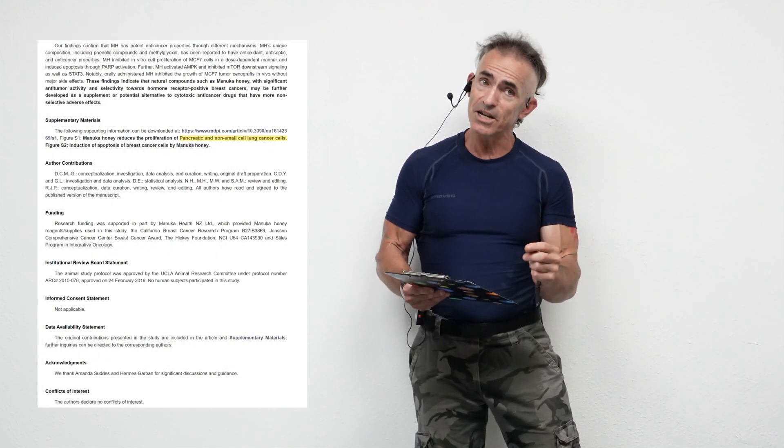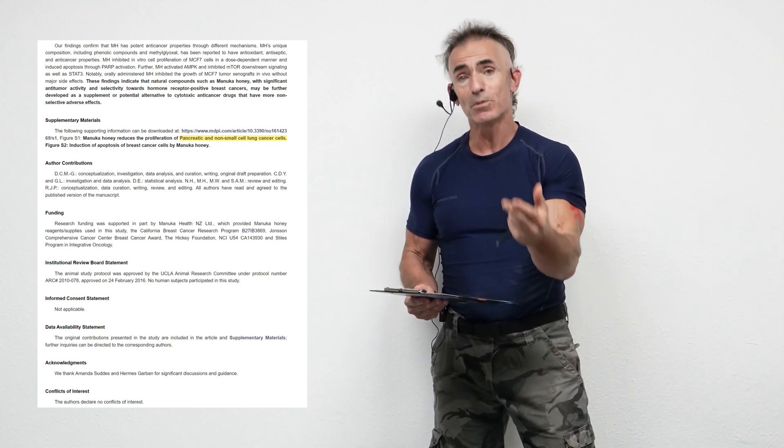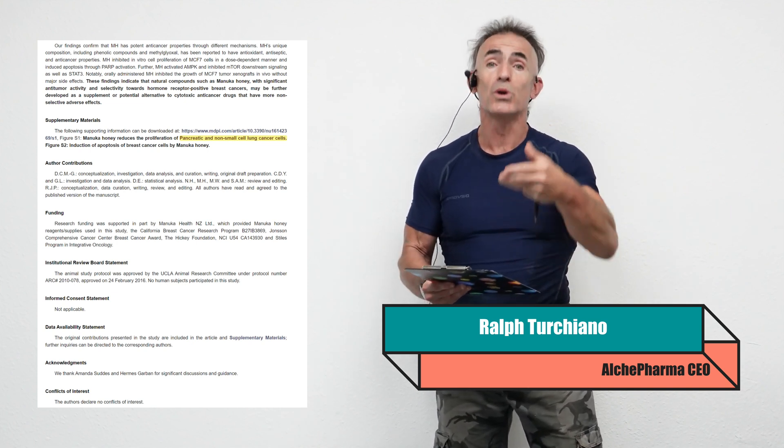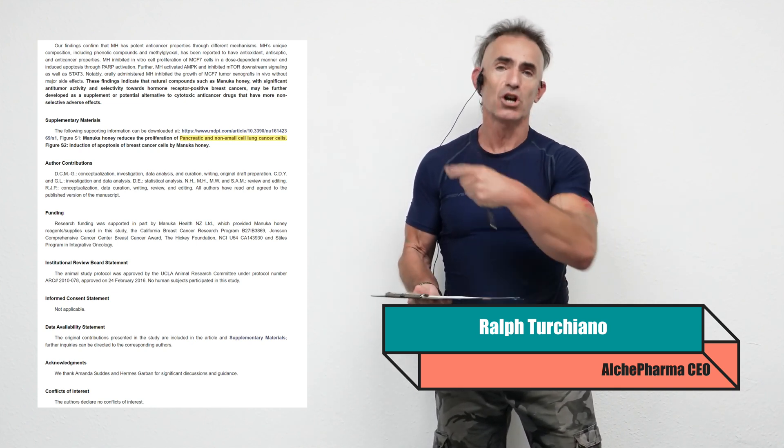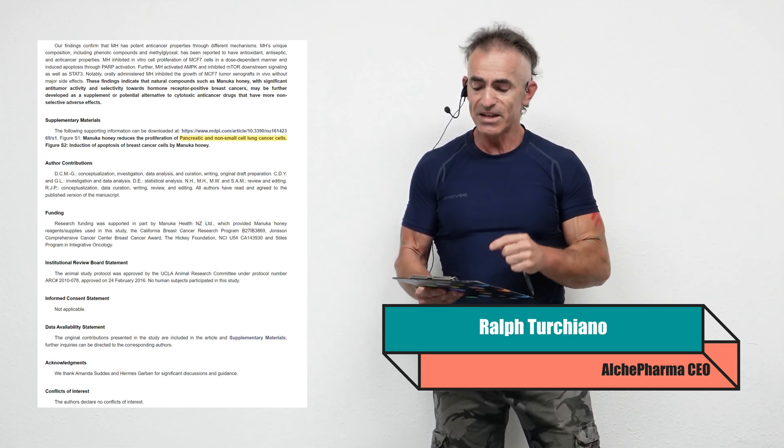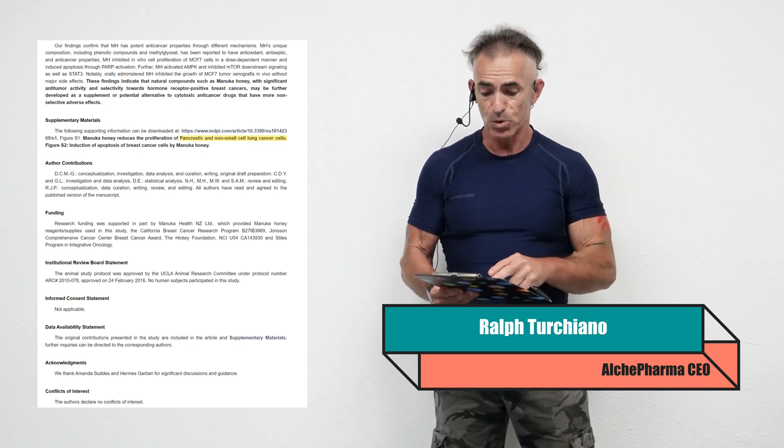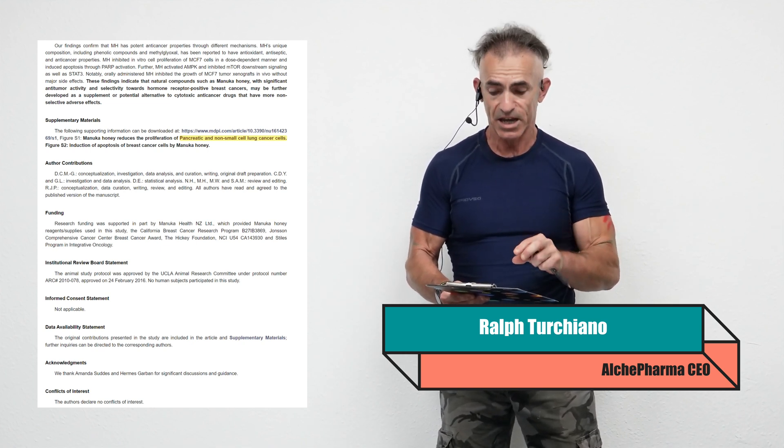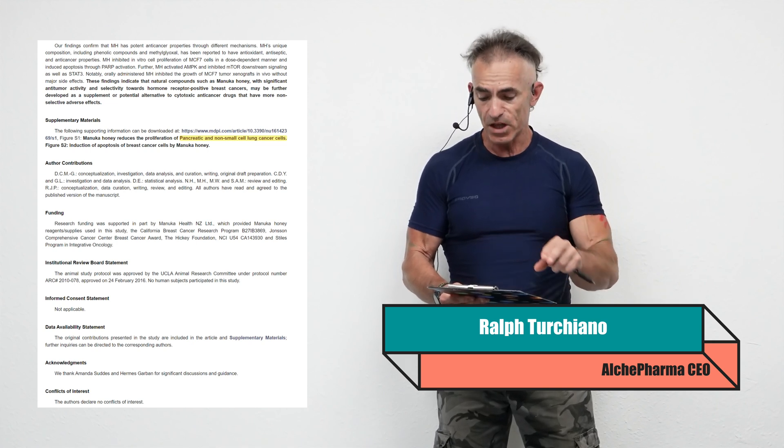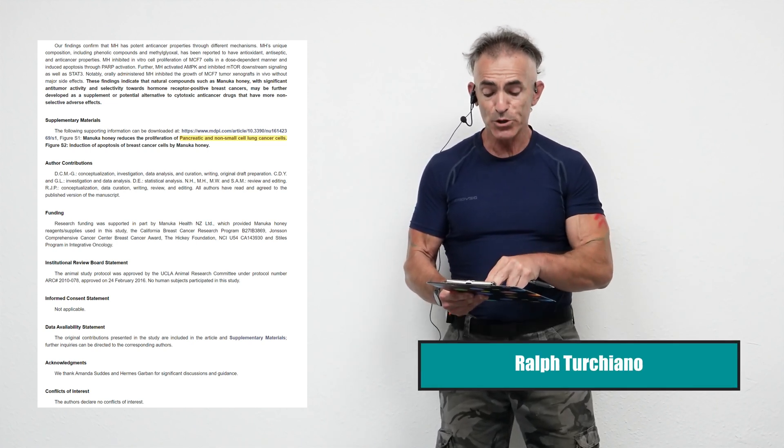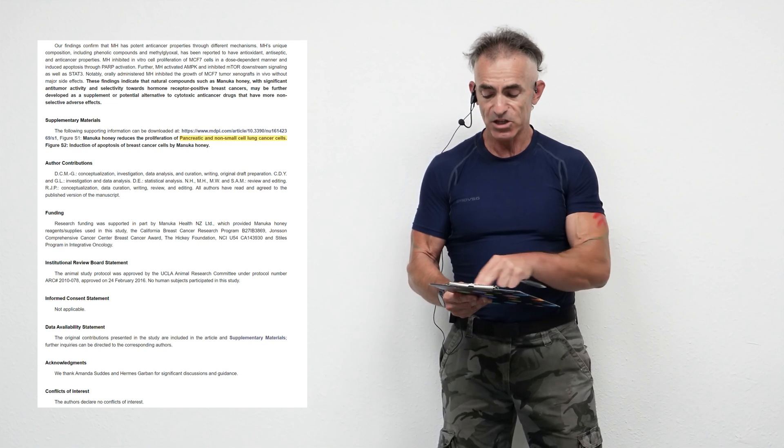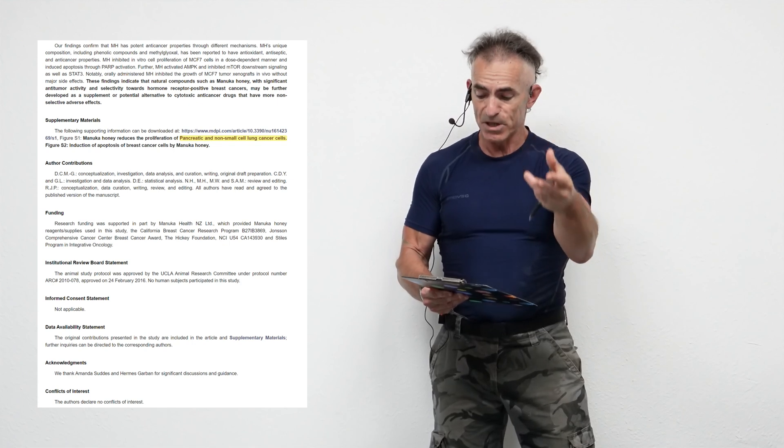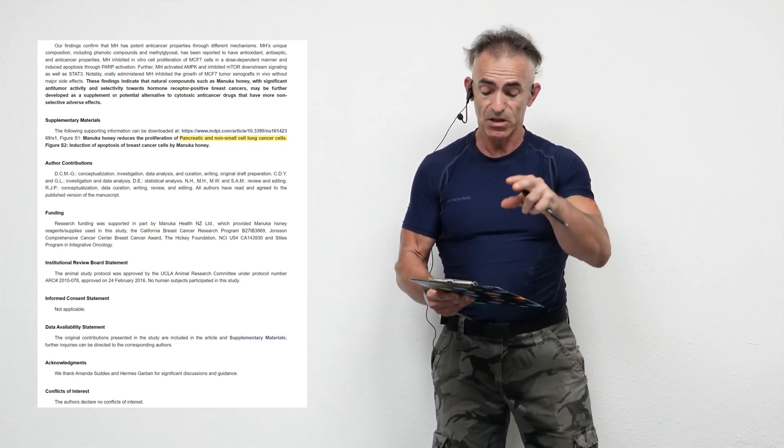The published study is more like the public study that's usually submitted to news organizations, where the full study usually is shared amongst researchers. These findings indicate that natural compounds such as Manuka honey with significant anti-tumor activity and selectivity toward hormone-receptor positive breast cancers may be further developed as a supplement or potential alternative to cytotoxic anti-cancer drugs that have more non-selective adverse effects. Now, look down below. You see the supplemental materials, pancreatic and non-small cell lung cancers as well.